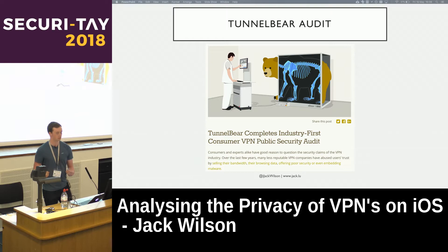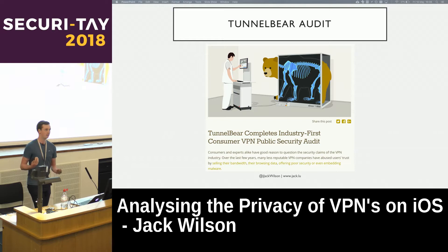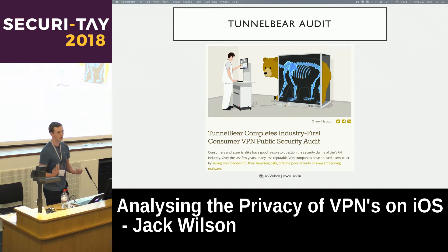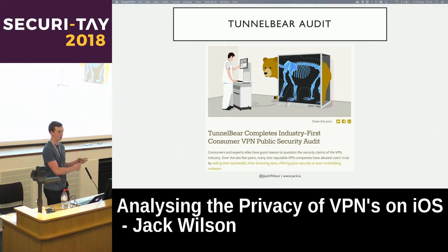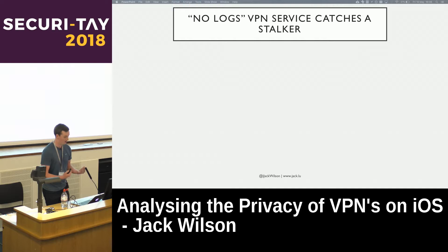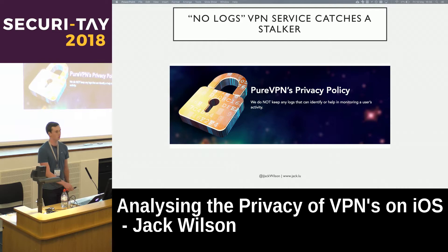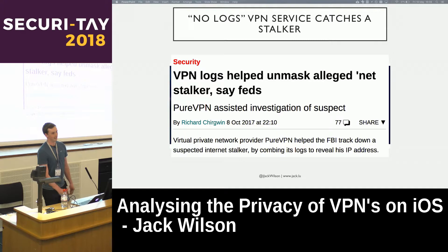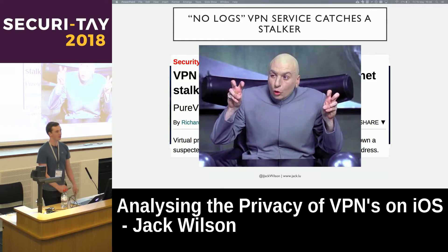There are some good examples of trust. TunnelBear recently completed an independent third-party security audit by a German pen-testing company called Q53. They published the results on their website, which signifies a good level of transparency. On the other hand, PureVPN has a big banner on their privacy policy saying 'we do not keep any records that could identify a user' — then they gave logs to the FBI that identified a user. No logs, apparently. So that's questionable.